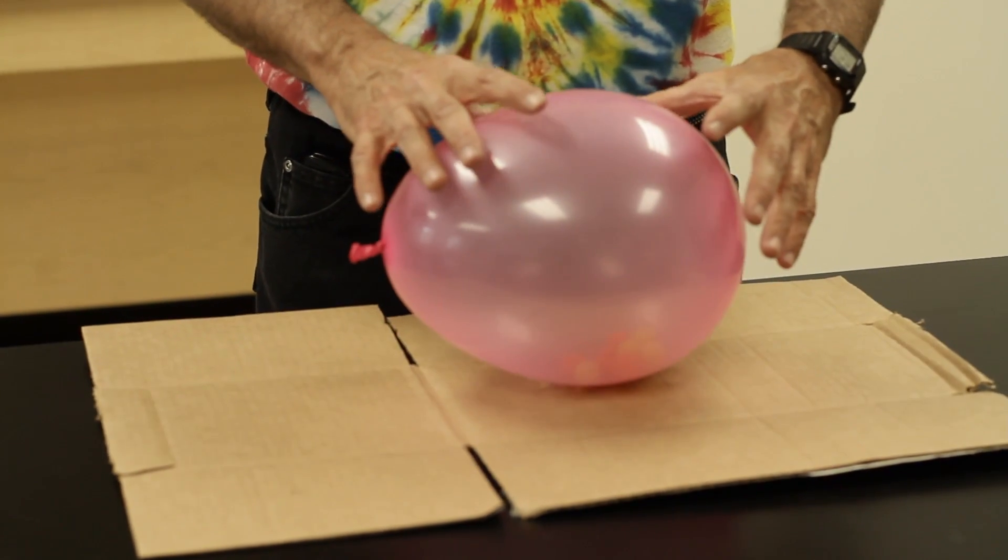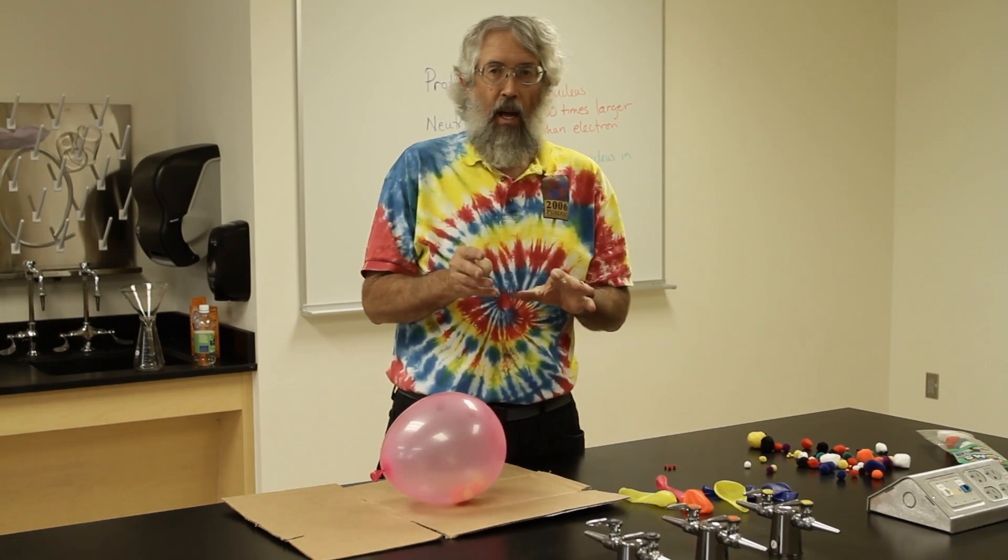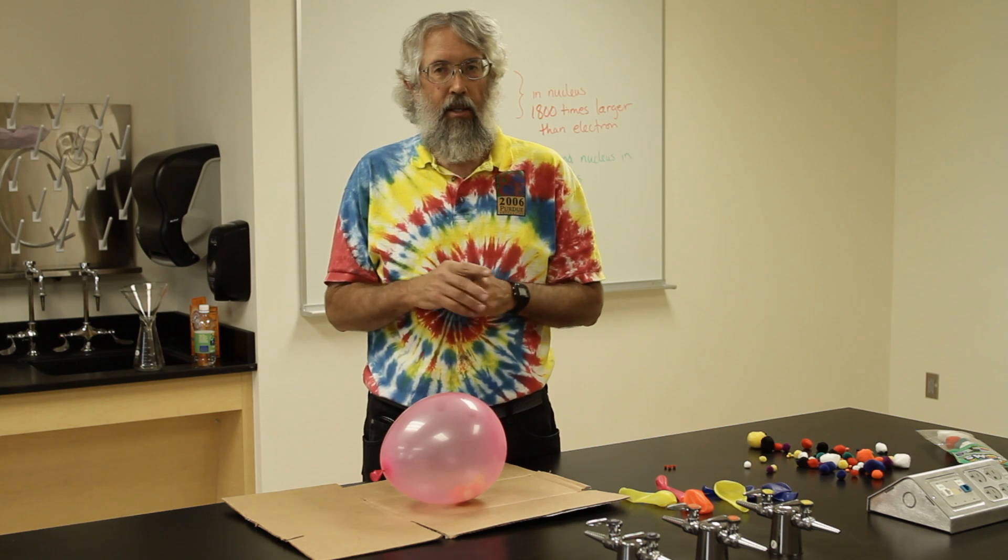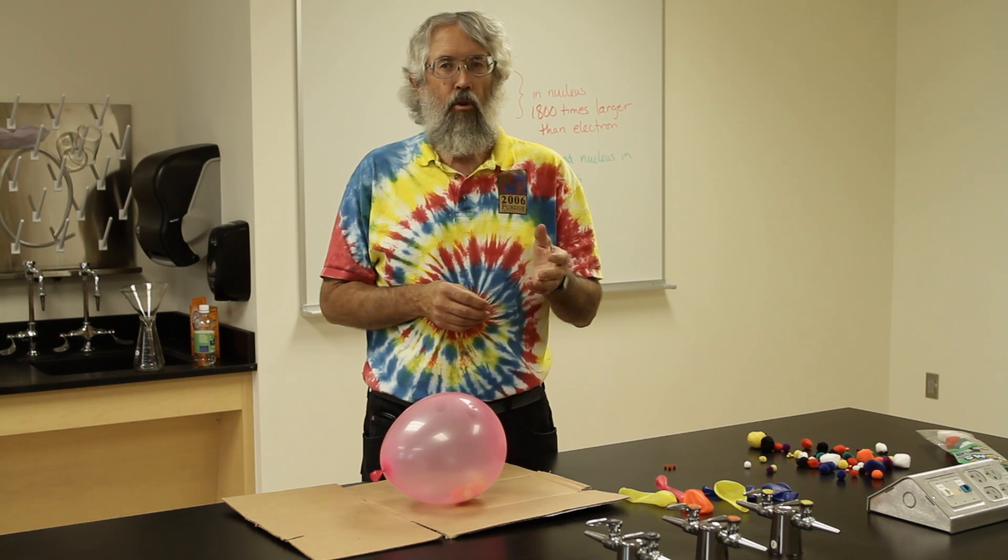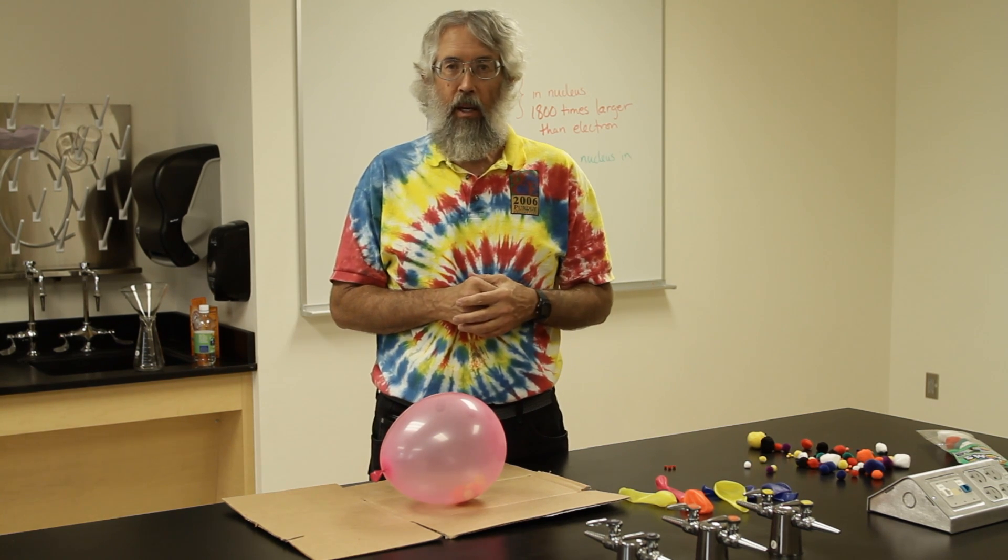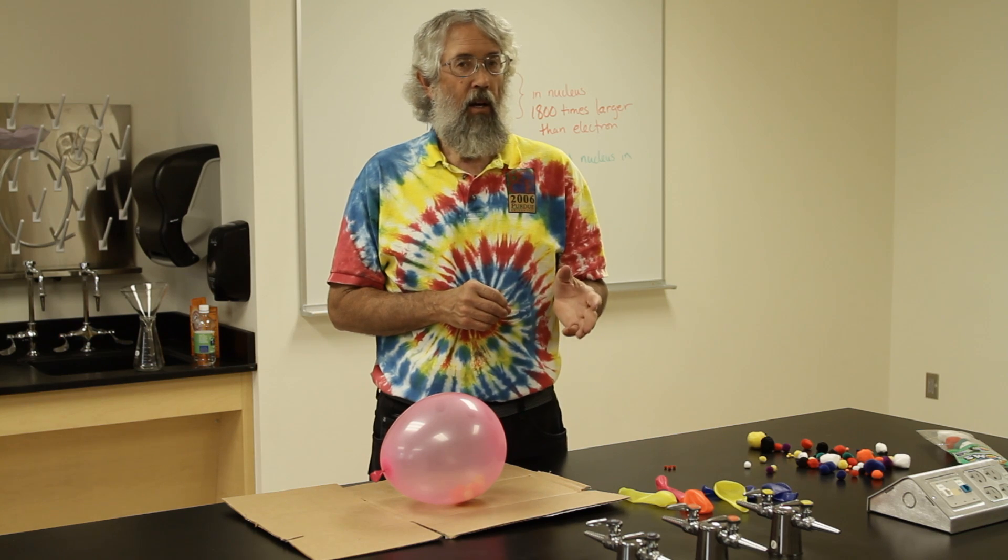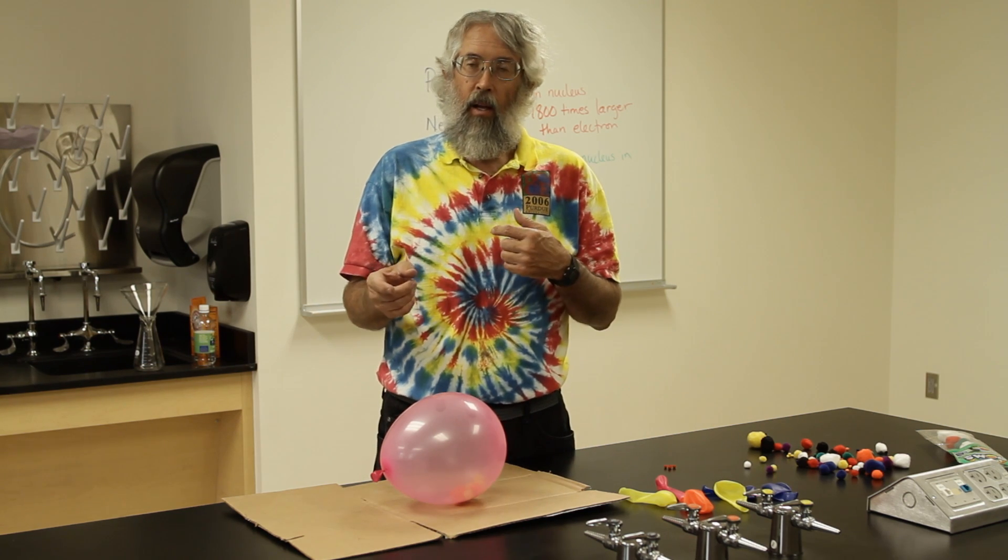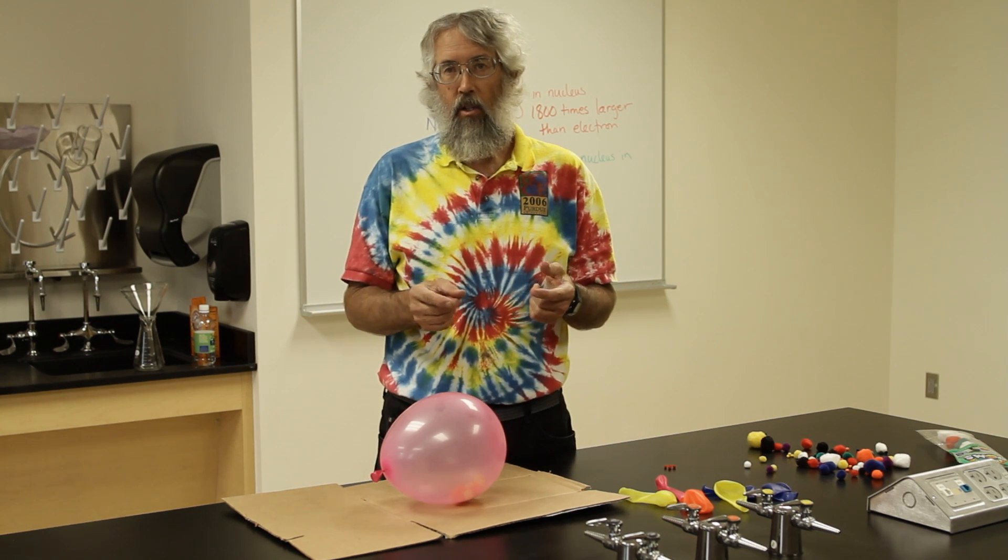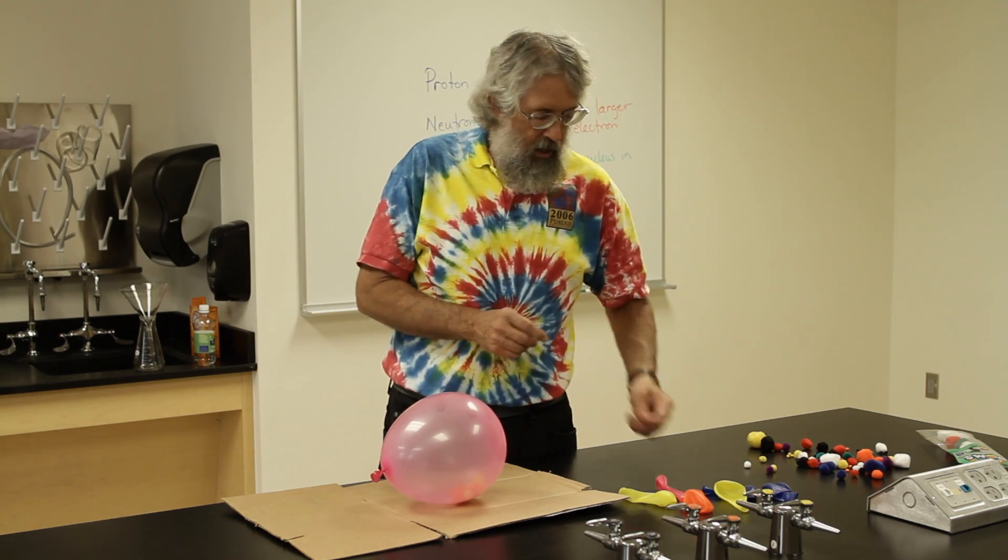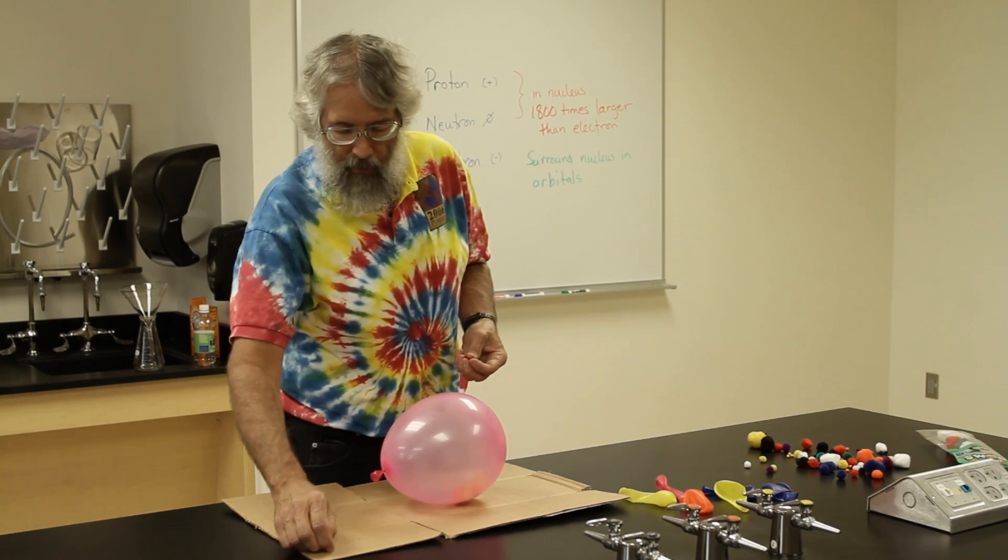So now, since beryllium has four protons, and each proton has a positive charge, to have a neutral atom of beryllium, we need four electrons of negative charges. That way, the positive and the negative charges add up to give us zero. So we'll take these four red pom-poms.